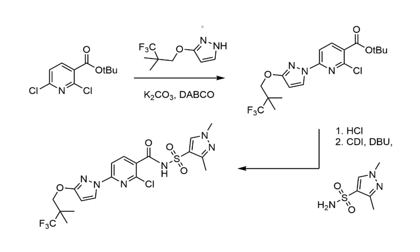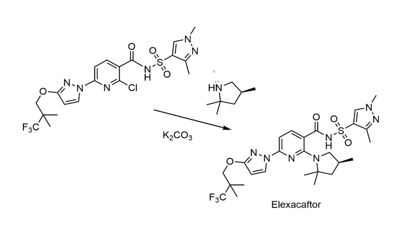For the final assembly, the trifluoromethyl-substituted pyrazole was introduced first via SNAr with potassium carbonate and DABCO, adding at the less hindered of the two chloro positions. The tert-butyl ester on the pyridine was removed with hydrochloric acid, and the revealed carboxylate was activated with carbonyldiimidazole and DBU to couple with the sulfonamide fragment. The final step is a second SNAr at the remaining chloride to install the pyrrolidine fragment using potassium carbonate, completing the synthesis of Elexacaftor. The route is highly convergent — tricky chemistry was handled in building block synthesis, with robust SNAr chemistry used at late stage.